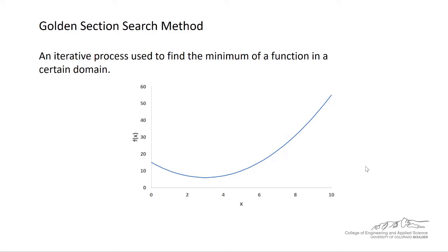Similar to the bisection technique, we can use this pretty ancient technique known as the golden section search method. It's an iterative process used to find the minimum of a function.